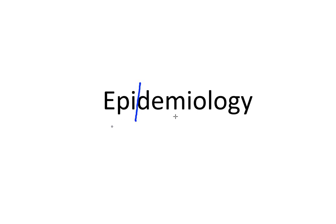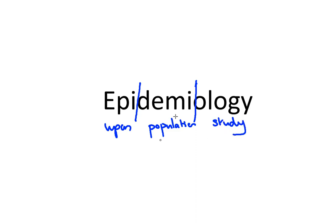In our study of microbes, we have now come to the topic of epidemiology. The word epidemiology comes from epi meaning upon, demy referring to the population, and ology referring to the study. So what we're doing is studying the things which come to affect a population, and of course the particular focus of this is the effect of disease on a population.